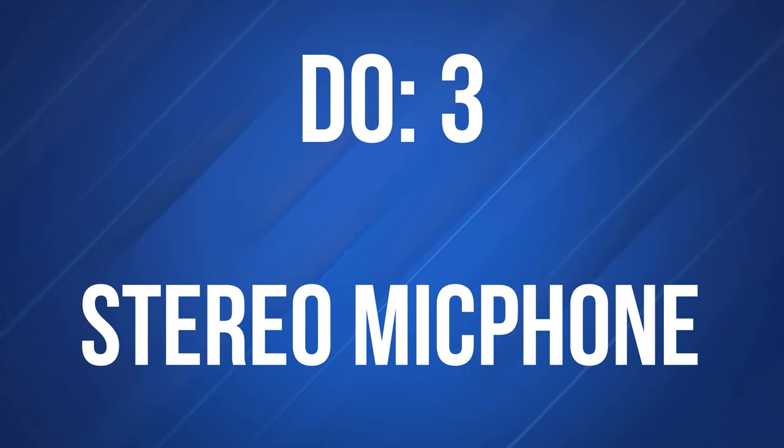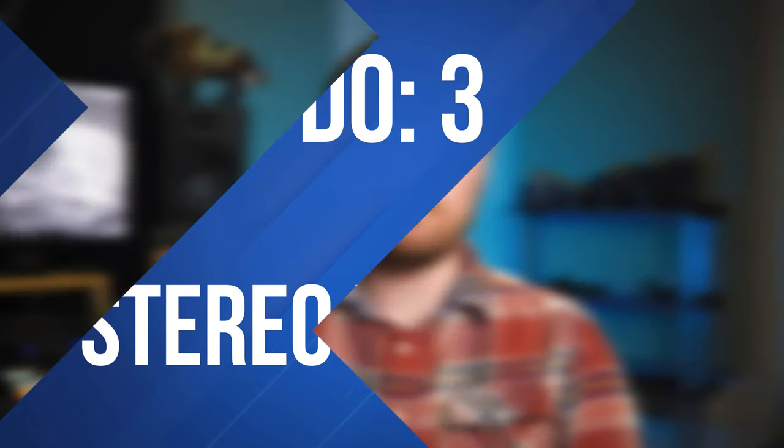The next few do's and don'ts are gonna be related to audio. Do number three: use a stereo microphone. When you're recording audio, you really have two options — it can be mono, which is a single audio channel, or it can be stereo, which is two audio channels: one left channel and one right channel. The two of them play together and you get this really nice, big, expansive sound. A mono source sounds like it's just right in the middle, kind of right between your ears.